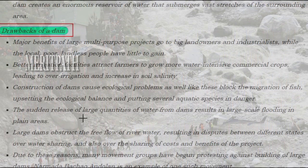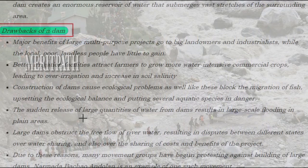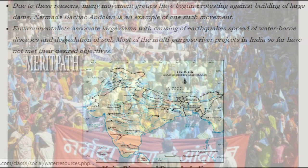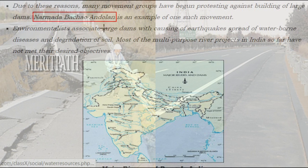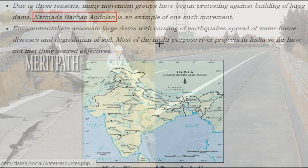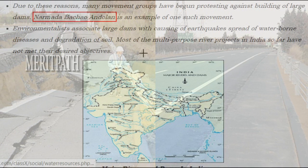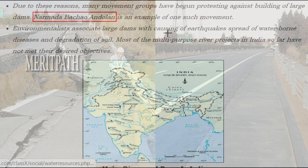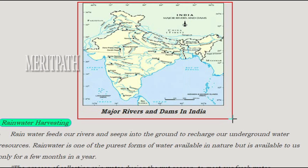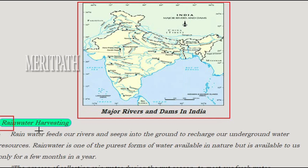Large dams obstruct the free flow of river water, resulting in disputes between different states over water sharing and the sharing of costs and benefits of the project. Due to these reasons, many movement groups have begun protesting against the building of large dams. The Narmada Bachao Andolan is one such movement. Environmentalists associate large dams with causing earthquakes, spread of waterborne diseases, and degradation of soil. Most multi-purpose river projects in India have not met their desired objectives. Here is a map showing major rivers and dams in India.